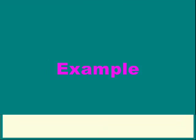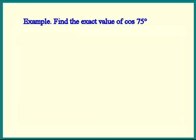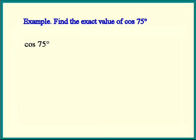We can use this identity to find the exact value of cosine of 75 degrees. 75 is not one of our special angles — 30, 45, and 60 are. Do we see a combo of those that make 75? Sure we do. Cosine of 75 degrees equals cosine of 30 degrees plus 45 degrees. The identity says the cosine of a sum is the cosine cosine minus the sine sine.